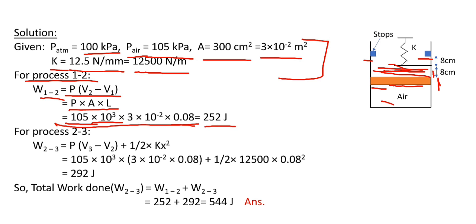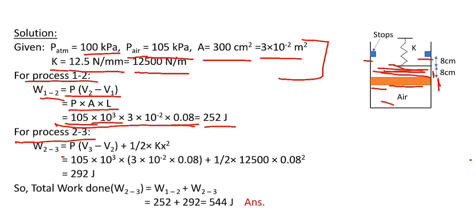For process 2 to 3, work done equals the sum of work due to the movement of piston and due to compression of spring. So W₂₋₃ equals P(V₃ - V₂) plus ½kx².